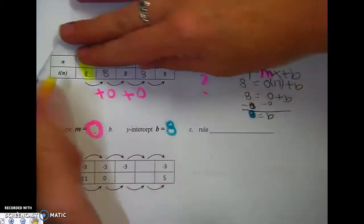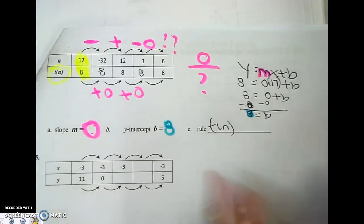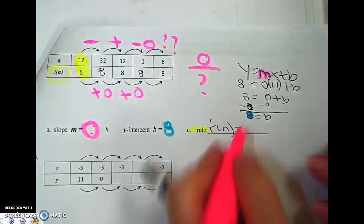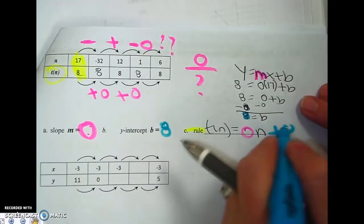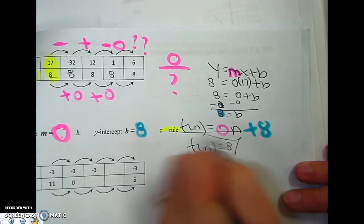Now I can write my rule. Well, it says use t of n this time. So t of n equals 0, n plus 8. And if I want to be really fancy, t of n equals 8. Okay?